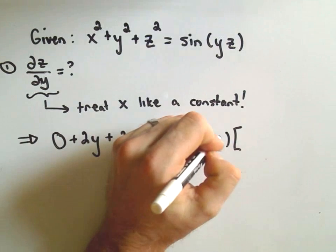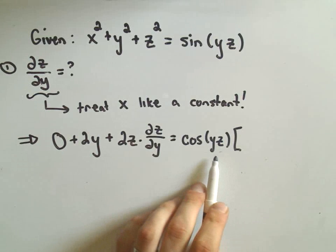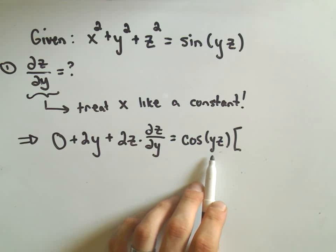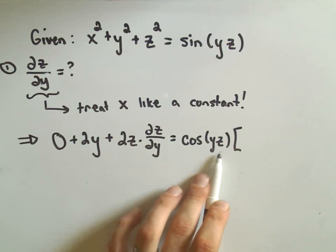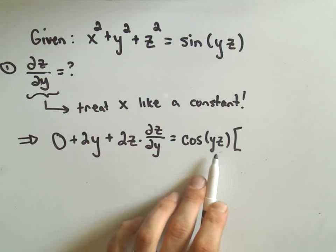But now we're thinking, in the other video we treated y like a constant, so things were kind of easy. Now we're thinking about y and z as both being variables in a sense.